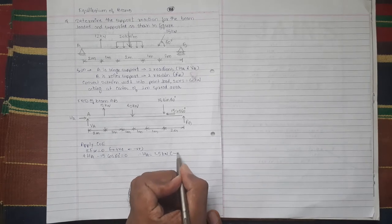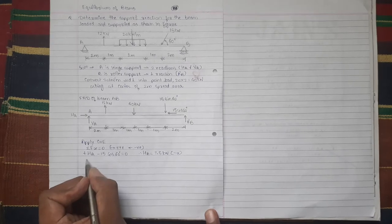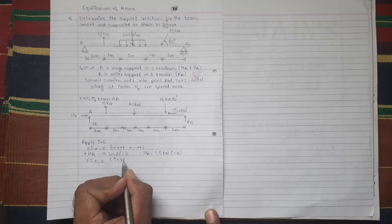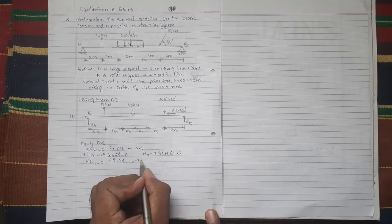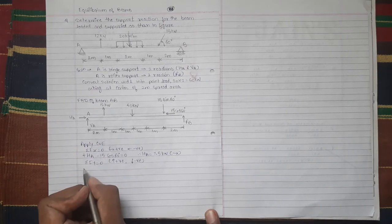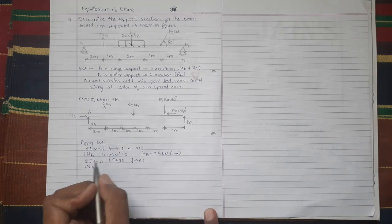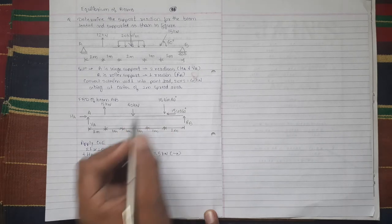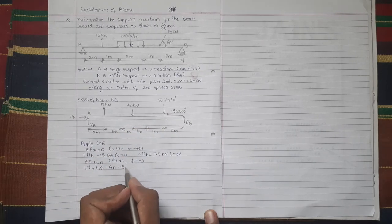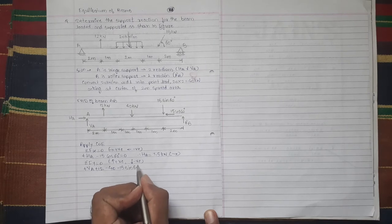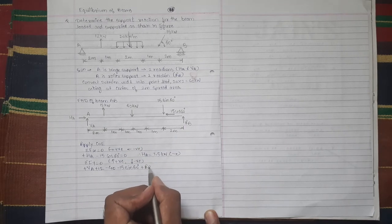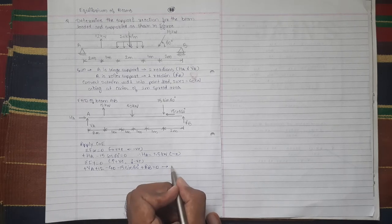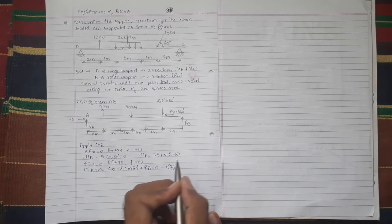Summation Fy = 0. Assumption is forces upward are positive, forces downward are negative. VA plus 12 minus 40 minus 15 sin 60 degree plus RB = 0. There are two unknowns VA and RB, so we will solve it afterwards. It is equation 1.